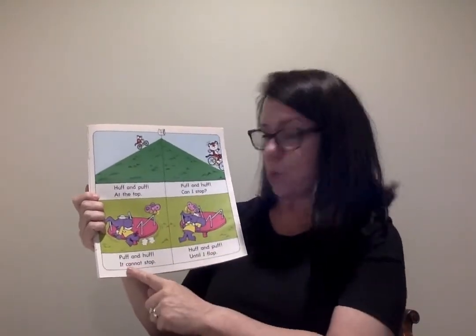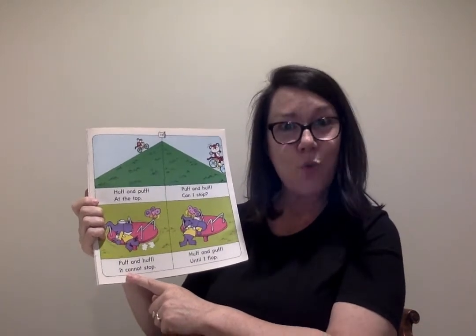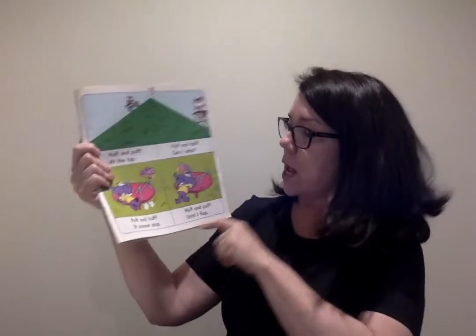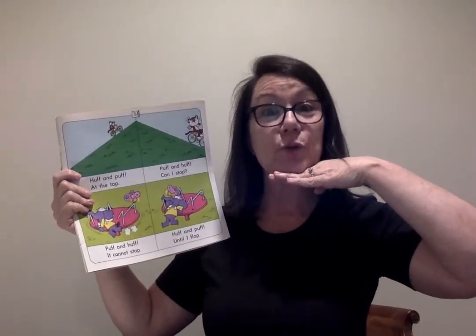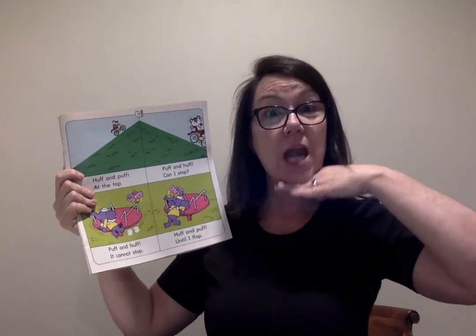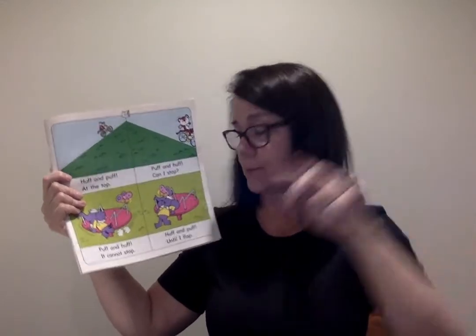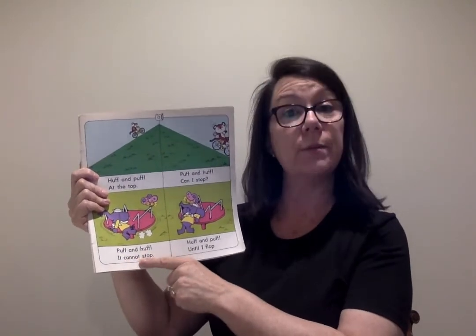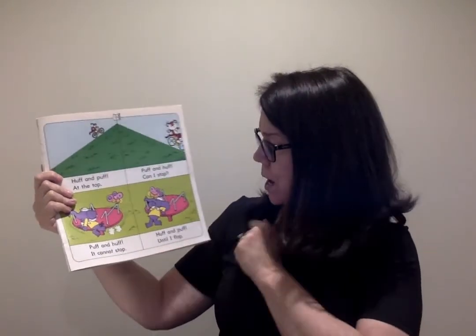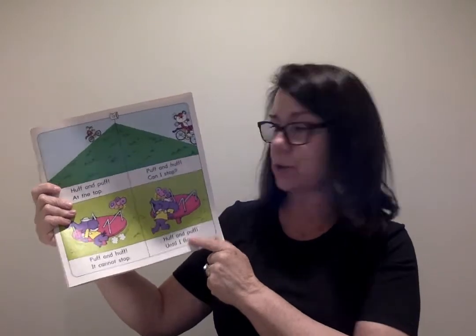On this page, when we get to the bottom, we have a compound word. When we pound our hands together, we're talking about a compound word — we're compounding two words. The compound word is 'cannot.' It is also a two-syllable word: 'can-not.' My chin dropped two times. You can break it apart and read it as 'can not,' then blend it back together: cannot. Again, 'until' — another two-syllable word.